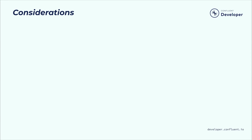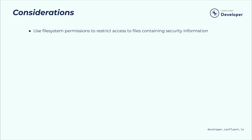Pay careful attention to your infrastructure. Your system comprises many different components — servers, networks, file systems — arrayed across many different environments. Make sure you're using file system permissions to restrict access to files containing security information, such as certificate keystores and keytab files, and avoid storing passwords in plain text anywhere on the system, including Zookeeper.